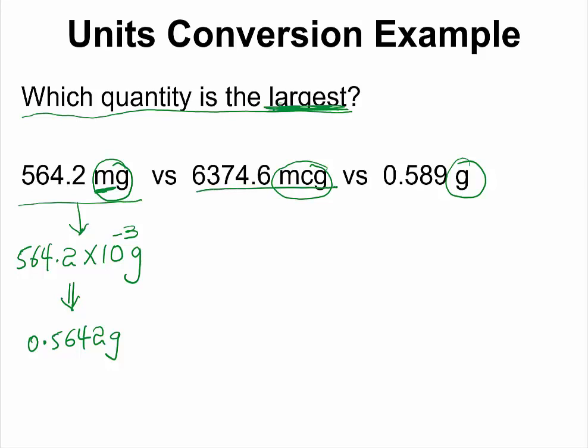Then we move on to the next quantity. Micro literally means 10 to negative 6. So we can rewrite this quantity as 6374.6 times 10 to negative 6 grams. And if you multiply this out in your calculator, you should get 0.0063746 grams.